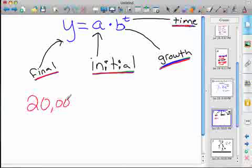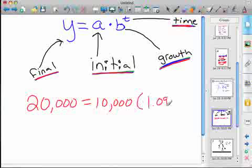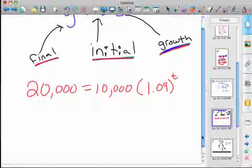So 20,000, our final equals 10,000 times 1.09 for 9% growth, all of your investment plus 9% to the T power.